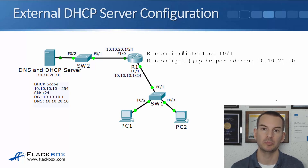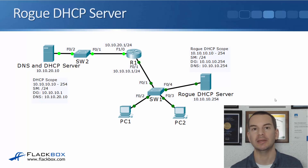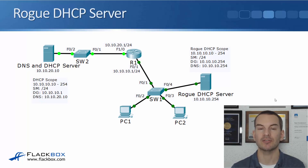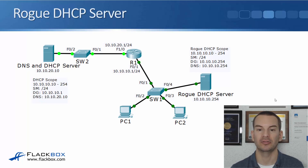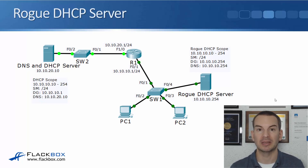We covered all that configuration before, but we can have a problem in our network, which is a rogue DHCP server. In our example here, a DHCP server has been connected on the same side of the router as the PCs. It actually doesn't matter where it was connected in — it would still give us the same problem.